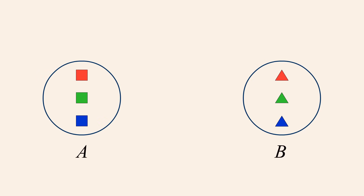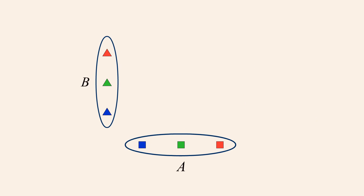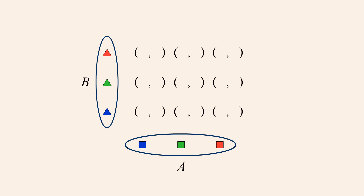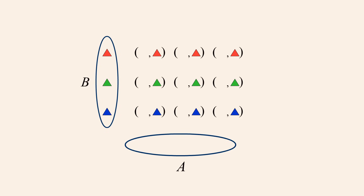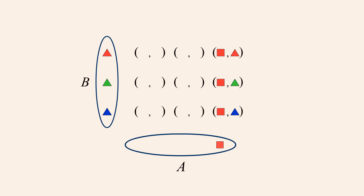To form the Cartesian product of two sets A and B, we create every possible ordered pair whose first element is from A and second element from B. Notice that each element of A is paired with every possible element of B. For example, the blue square from A forms ordered pairs with each of the triangles from B. The same is true for the green square and red square.